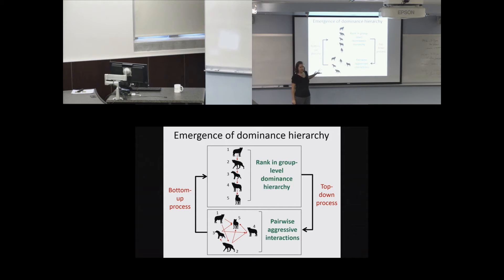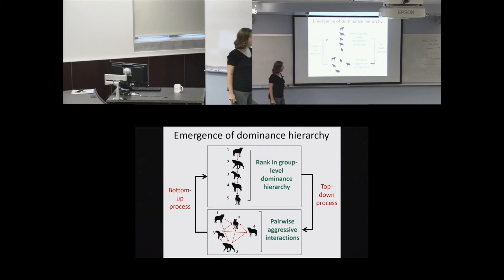Some of the foundational research on dominance hierarchies has focused really on this bottom-up process of how individual interactions form the dominance hierarchy. But we have much less understanding of how individuals actually perceive rank and the cognitive processes they use to come up with some sort of cognitive model of the rank-ordered hierarchy.